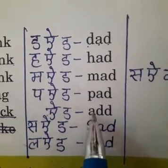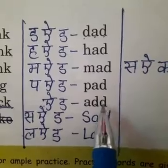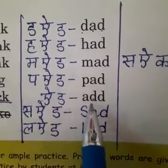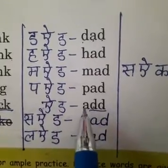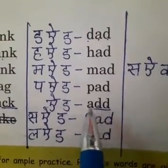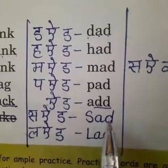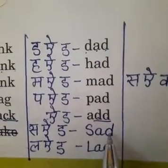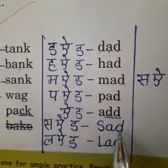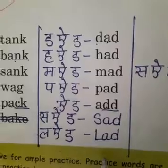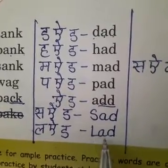A is A, D is D, D is D, but we will speak D for one time only. A, D — Add. S, A, D — Said. L, A, D — Laid.